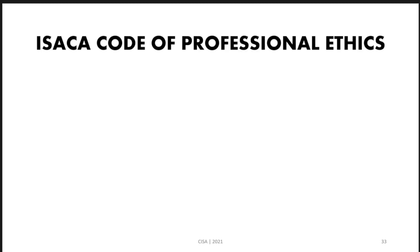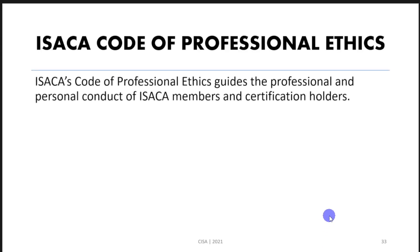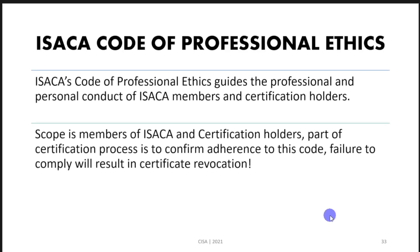The ISACA Code of Professional Ethics is a code developed and published by ISACA to guide professionals and personnel to conduct audits in a good manner. The scope of this Code of Ethics covers all holders of certifications like the CISA certification and ISACA members.